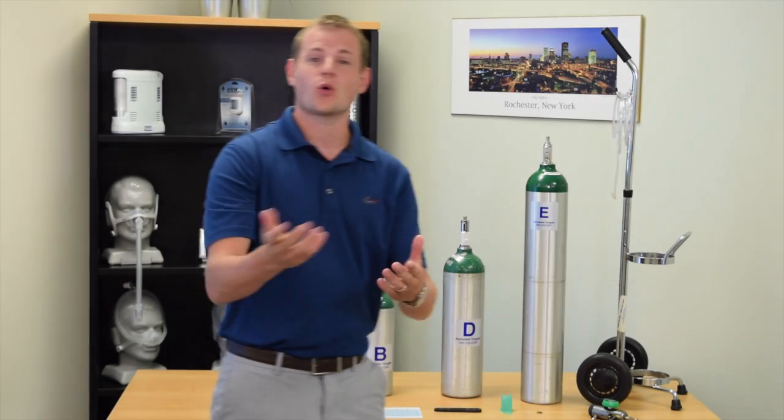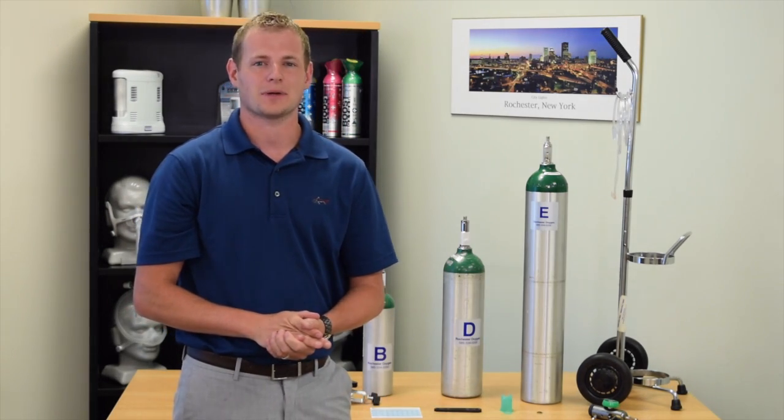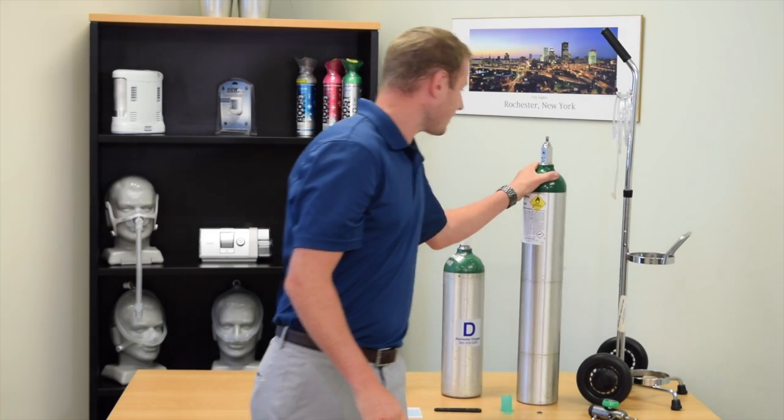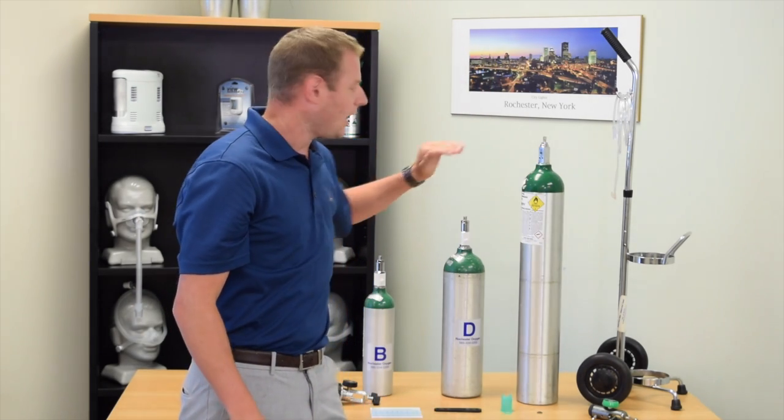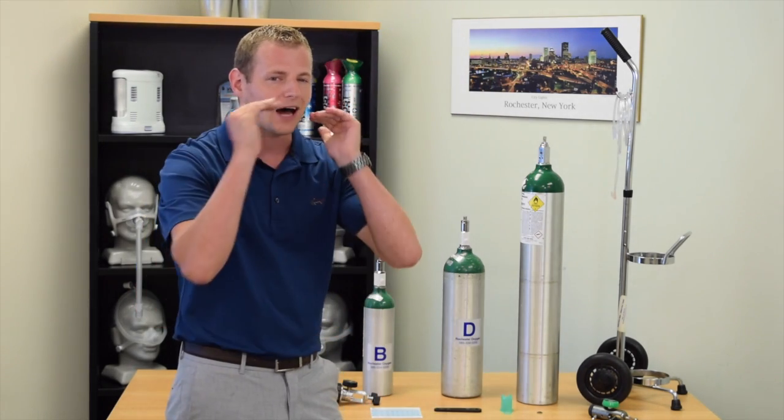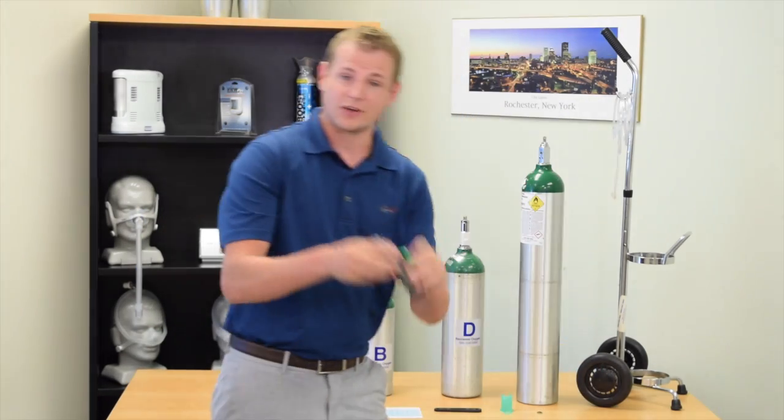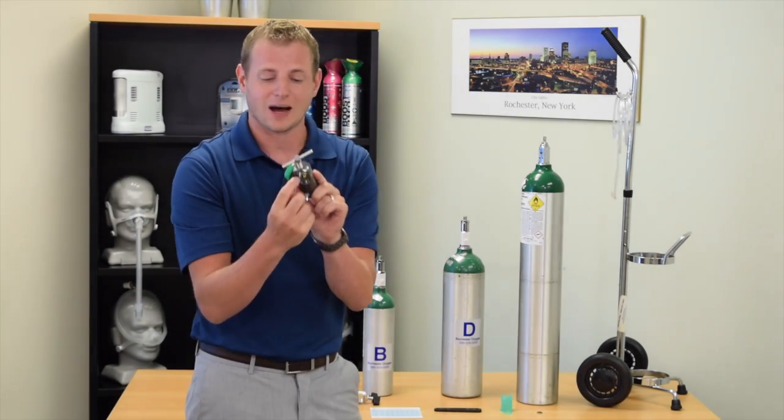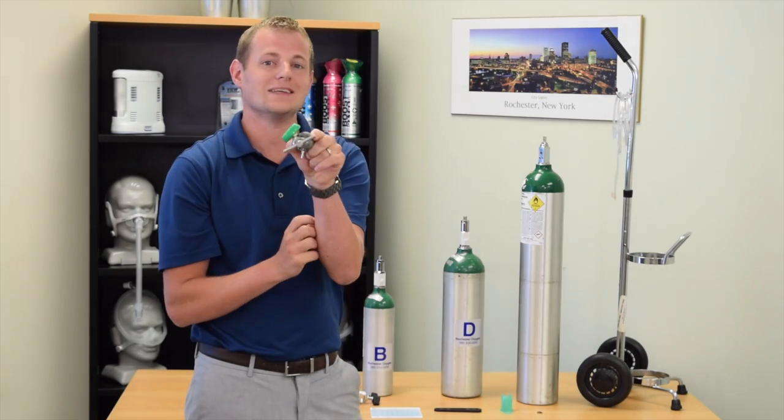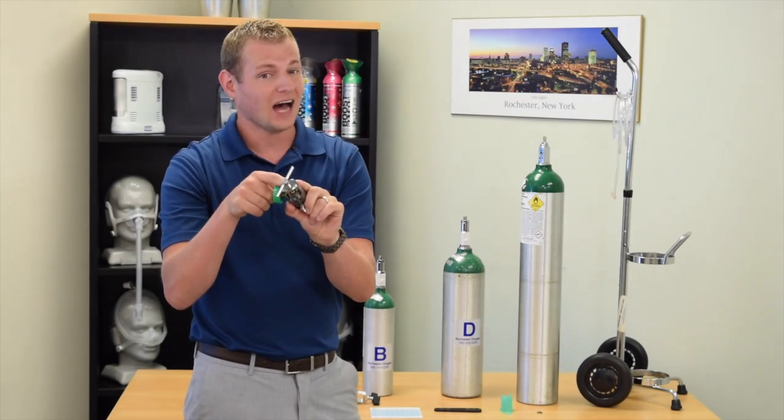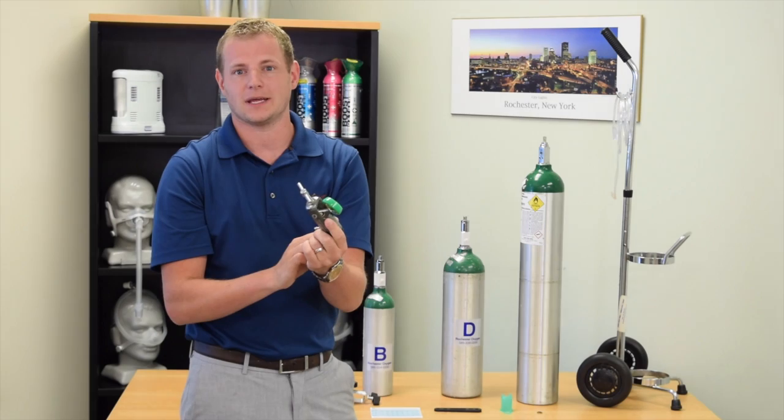Once you have all your equipment, it's time to set things up. Start by placing your tank on a flat solid surface. Eye level is usually preferred as it allows you to see a little bit easier. Grab your tank regulator and verify that your copper washer is in place. If it's not there, grab an extra washer and pop it in.